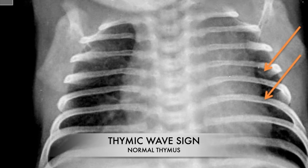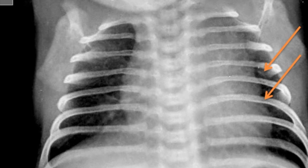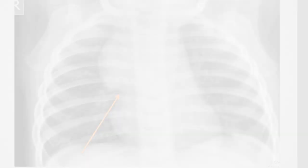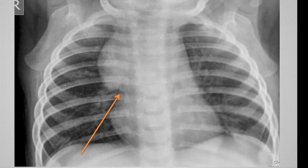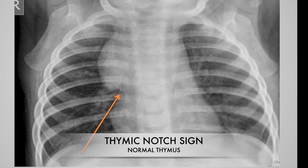The thymic wave sign can be seen on the right as well as on the left. The thymus is located in the superior mediastinum anteriorly. It is a very soft organ visible on X-ray up to 3 years of age; thymic shadow should not be visible after 3 years. When its lateral border is indented by the anterior ends of ribs, it gives undulation to the lateral margin — a typical wave sign. When the inferior border of the thymus interrupts the cardiac shadow, it gives a typical notch, called the notch sign, which can be seen on the right or the left.